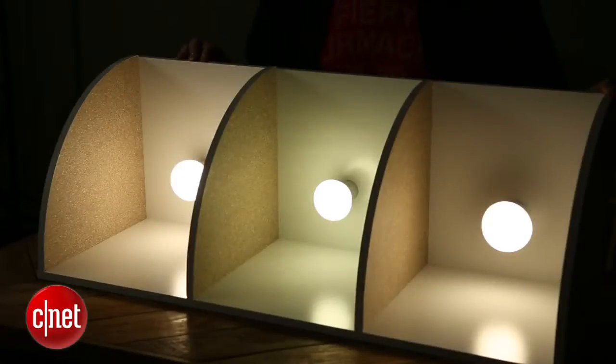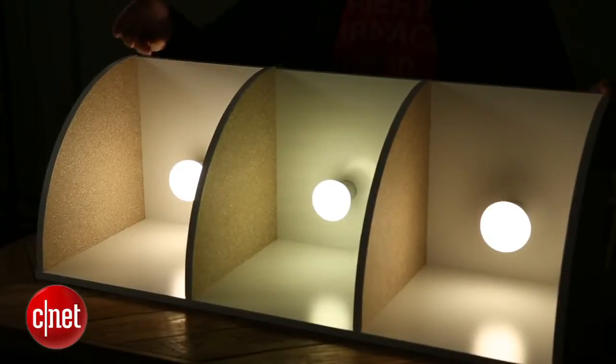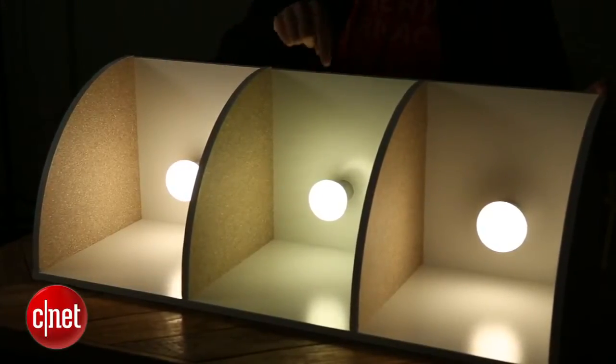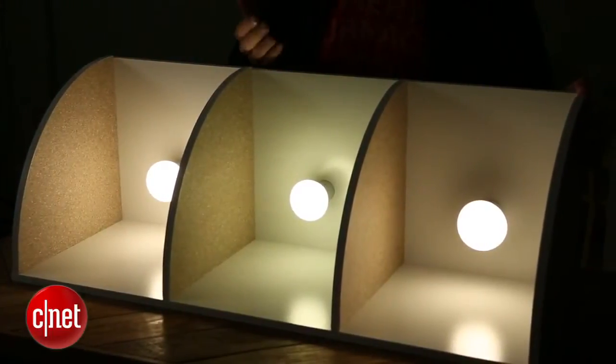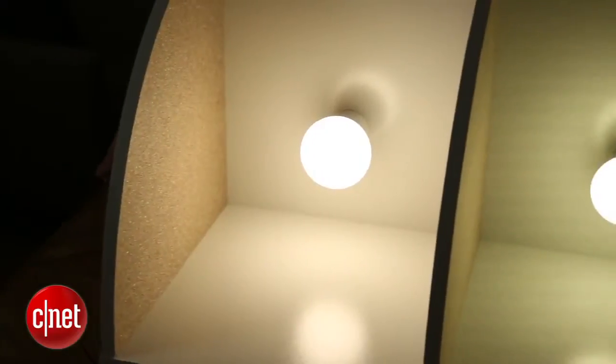So how does this bulb compare to other bulbs like it? Well let's take a look here. We've got the TCP bulb on the left and then we've got in the middle here the Philips Hue bulb. Now the Philips Hue is a little dimmer. It's 600 lumens. You can see a slight difference in the brightness. Not too terribly noticeable but it's there.